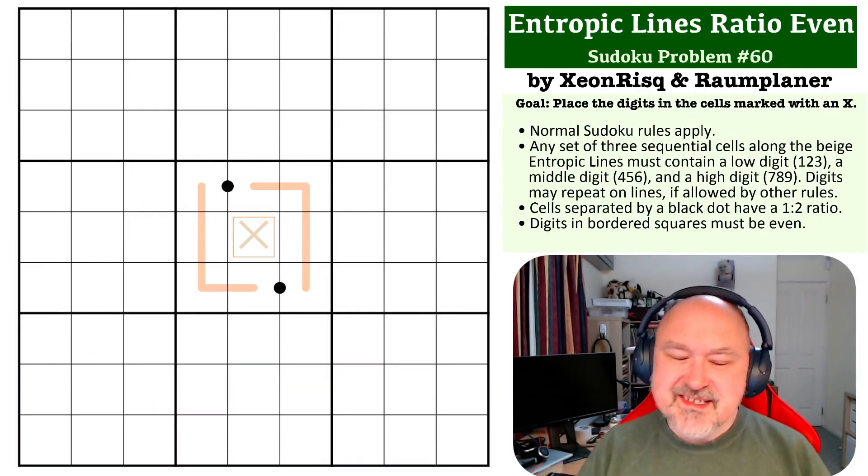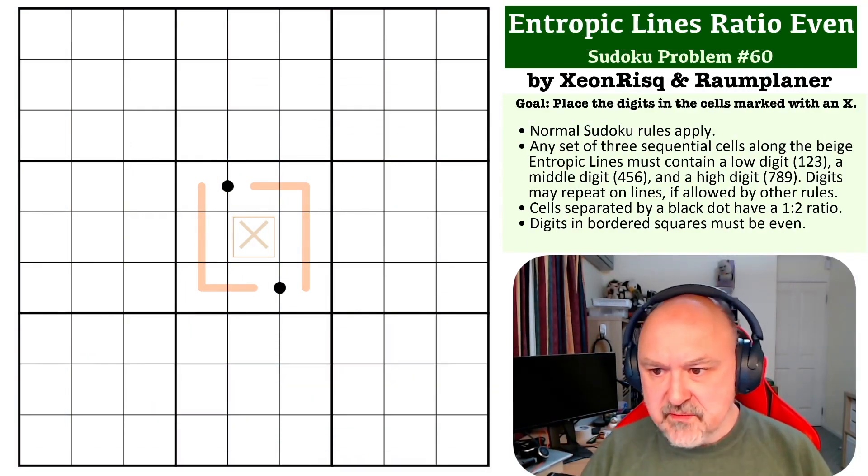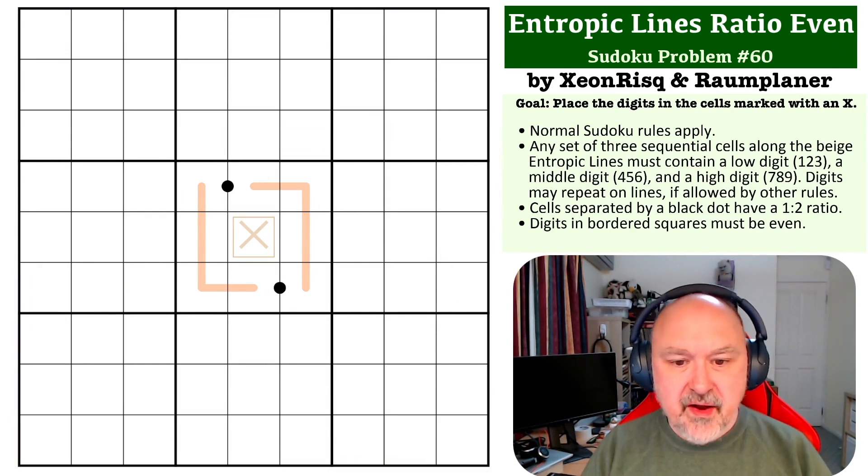Hey everyone, this is Bremster, and this is number 60 in my Sudoku Problem series. This is an entropic line ratio even problem, where the goal is to place the digit in the cell marked with an X, which is also where the even square is.